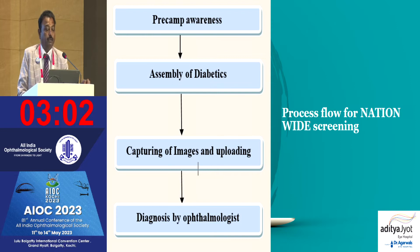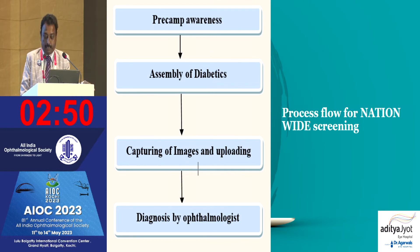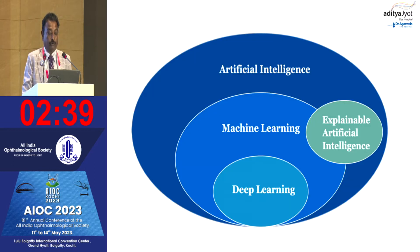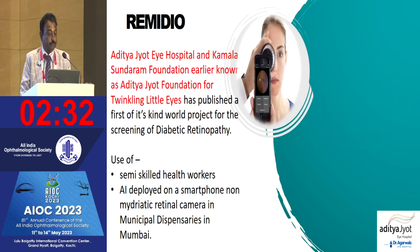We conduct pre-camp awareness activities in the slums of Mumbai, capture images, and upload them. We currently use ophthalmologists, AI, trained optometrists, and image graders. As AOS president in 2019, I proposed a nationwide AI-based screening model using machine learning, deep learning, and explainable AI for all of India.